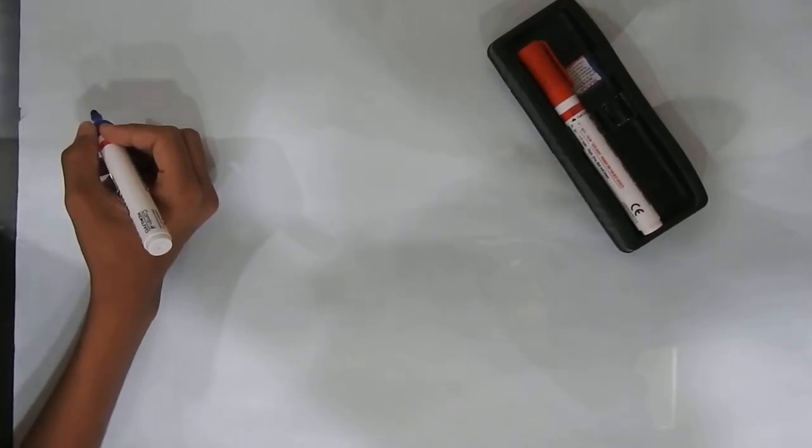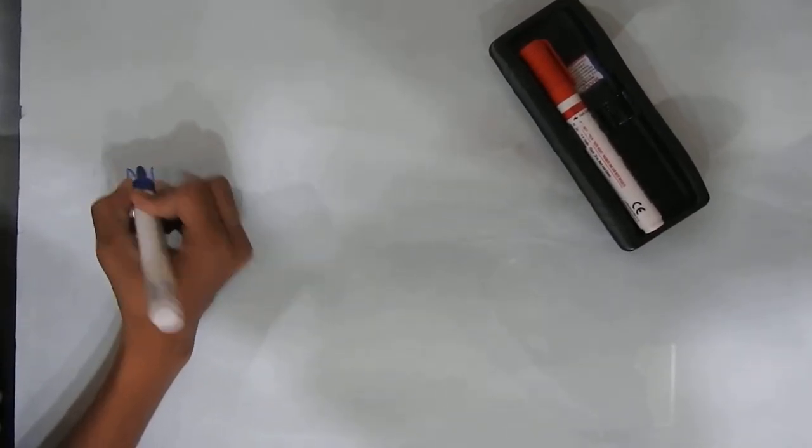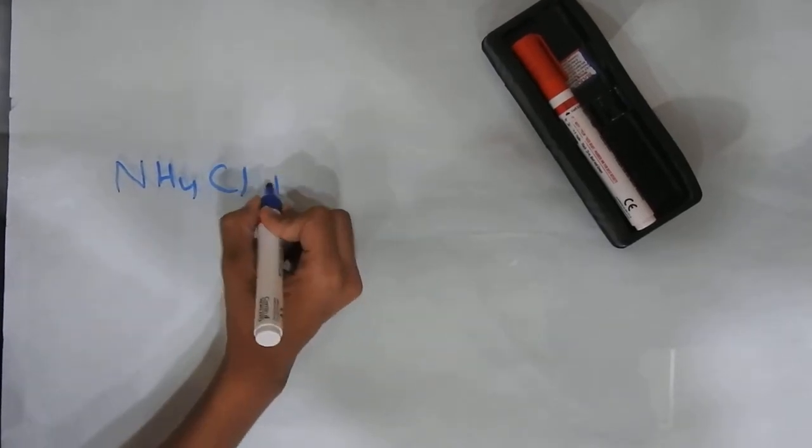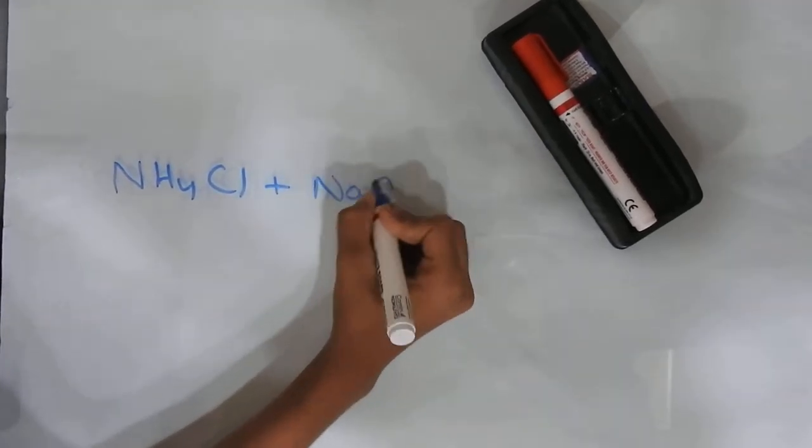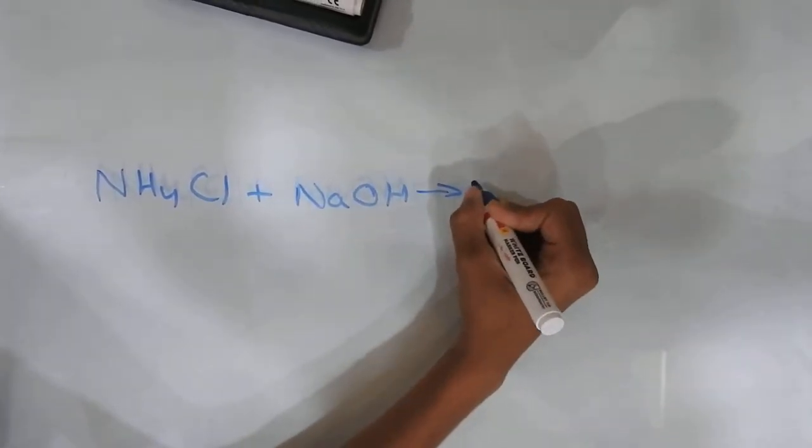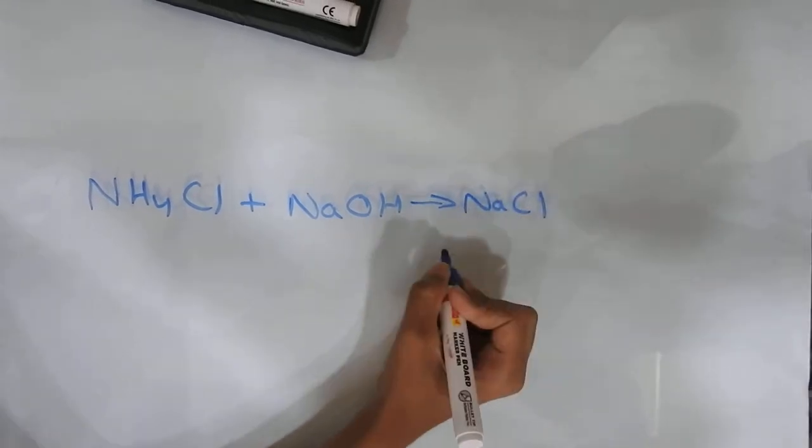Hey guys, welcome back after a long time. Today we are going to do a chemistry experiment. Today's reaction is ammonium chloride (NH4Cl) plus sodium hydroxide, an alkali, which gives sodium chloride, a normal salt.